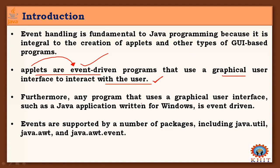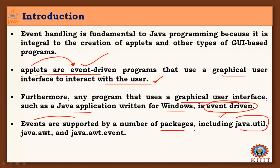Furthermore, any program that uses a graphical user interface — especially in Windows applications — is considered an event-driven program. Some events are supported by a number of packages, including java.util and java.awt, specifically the event class in the Abstract Window Toolkit.